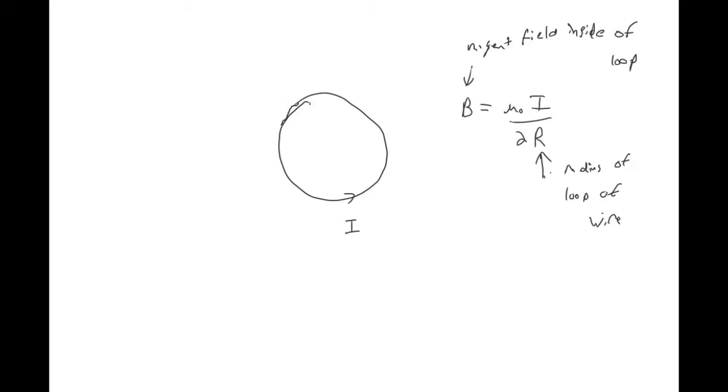And this is the magnetic field inside of the loop. And we saw another right hand rule for this one, where you put your fingers in the direction of the current, and then your thumb points in the direction of the magnetic field. So in this picture, the magnetic field is coming out of the board.